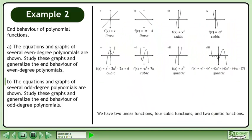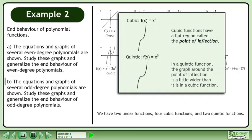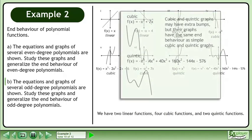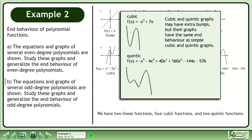We have two linear functions, four cubic functions, and two quintic functions. Cubic functions have a flat region called the point of inflection. In a quintic function, the graph around the point of inflection is a little wider than it is in a cubic function. Cubic and quintic graphs may have extra bumps, but their graphs have the same end behavior as simple cubic and quintic graphs.